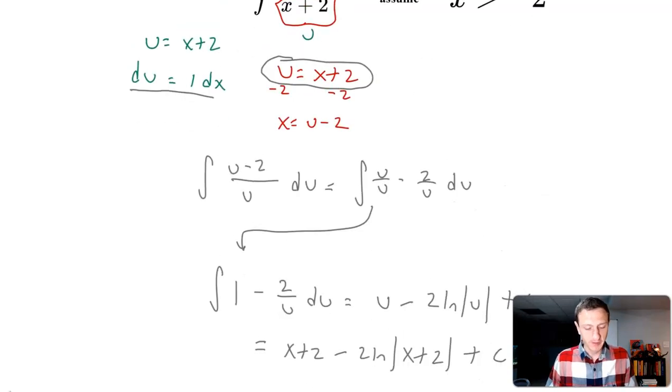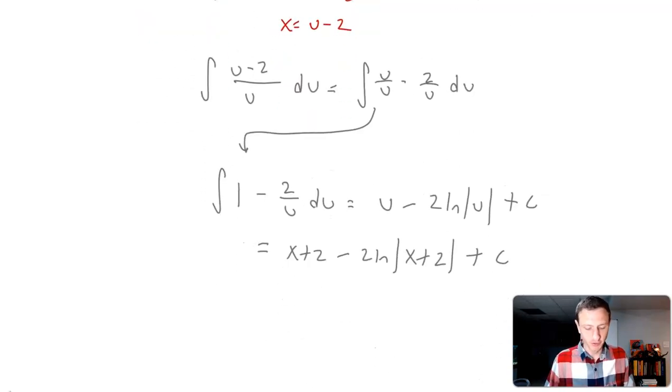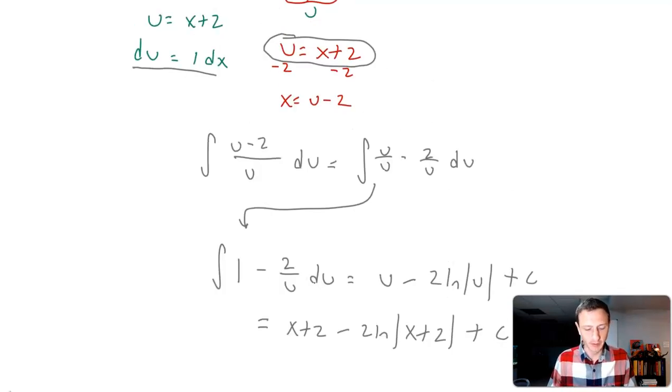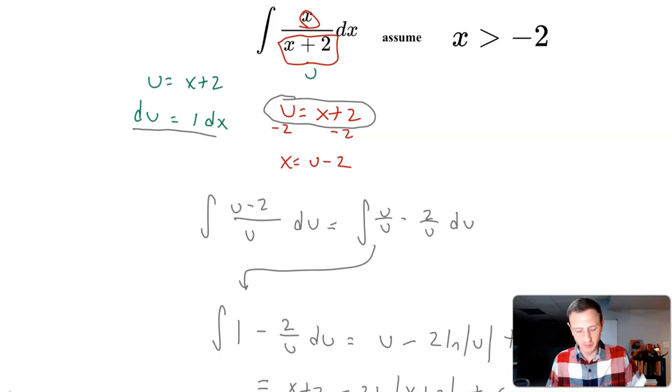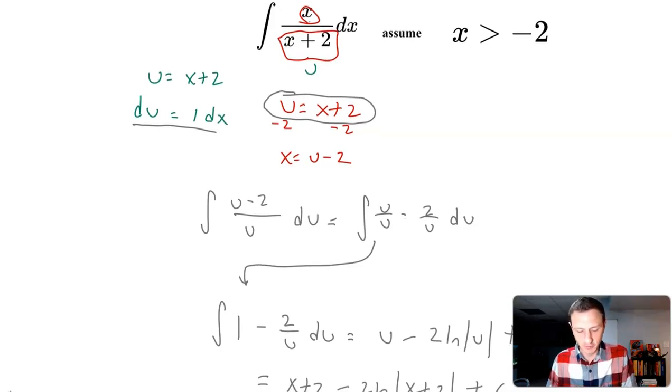So the tough thing about this problem is that it didn't work out in the traditional substitution sense where we have u and du. We had to work around that a little bit by creating some terms in terms of u, like what does x equal? x equals u minus 2. What does x plus 2 equal?